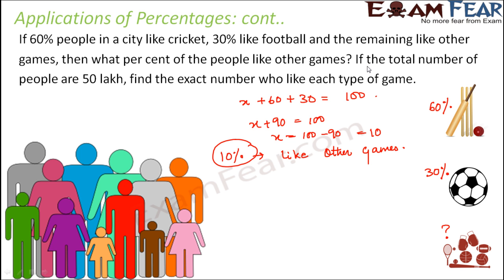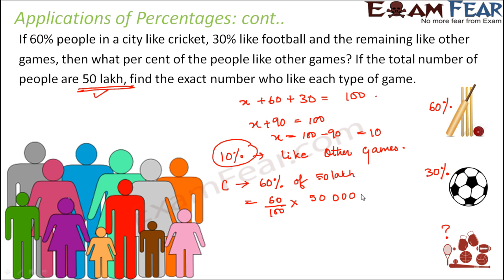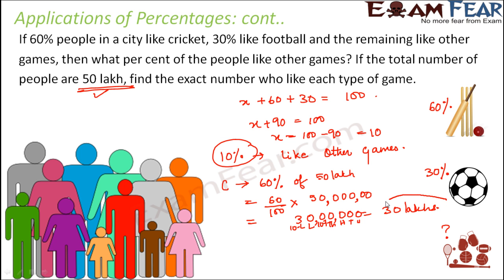The second part of the question says the total number of people is 50 lakhs. Find the exact number who like each game. For cricket: 60% of 50 lakhs = 60/100 × 50 lakhs = 30 lakhs. So 30 lakhs people like cricket.